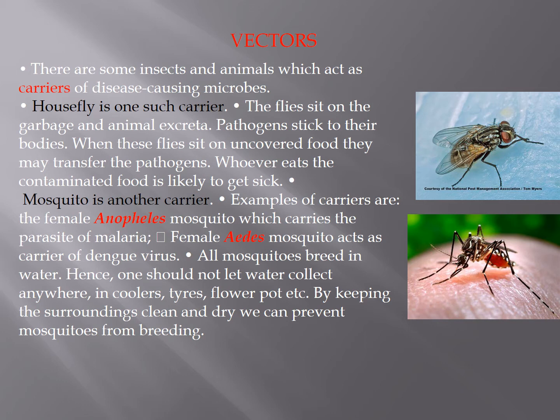Another example is the female Aedes mosquito, which acts as a carrier of the dengue virus. All mosquitoes breed in water, so one should not let water collect anywhere — in coolers, tires, flower pots, etc. By keeping the surroundings clean and dry, we can prevent mosquitoes from breeding. In summary, biological vectors are organisms that do not spread disease directly but act as carriers of the pathogen, transmitting it from an infected person to a healthy person.